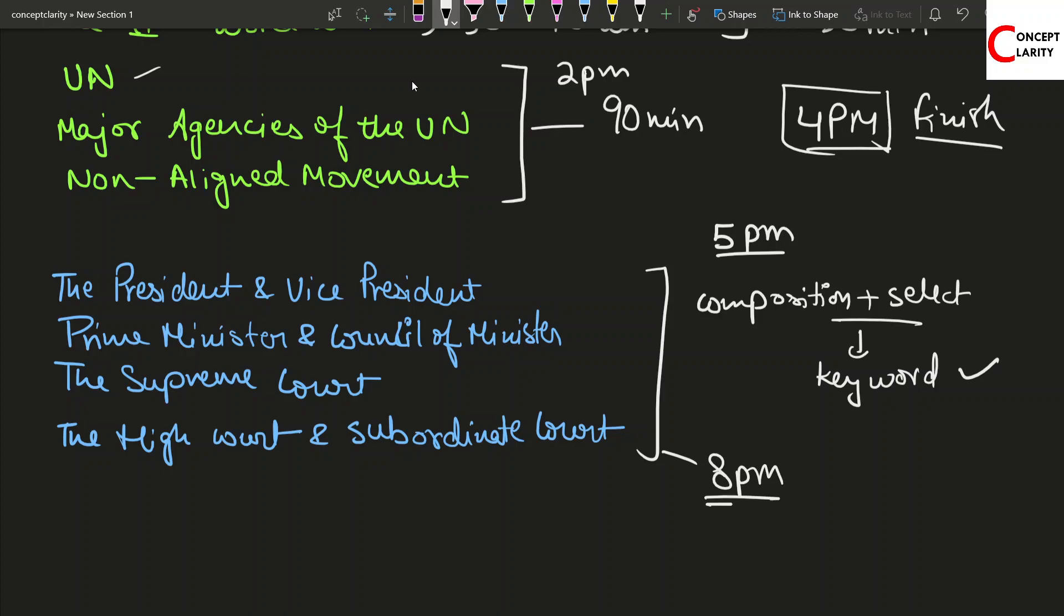You can start at 5 and finish civics max to max by 8 PM. In 3 hours you would be able to do your civics part with thorough revision of compositions - exact numbers, exact working standards, eligibility criteria. In short, 11 to 4 PM we are going with history first half of the day, and second half 5 to 8 PM we will be finishing civics.